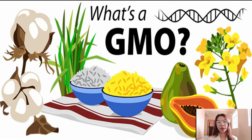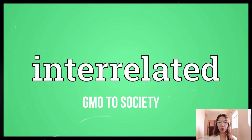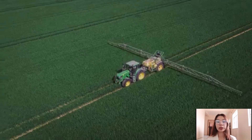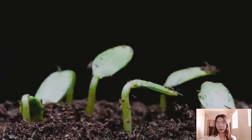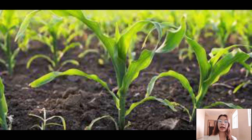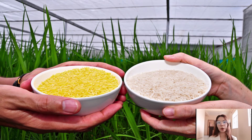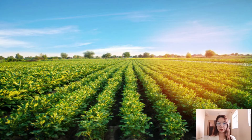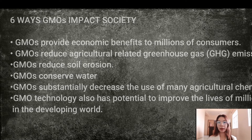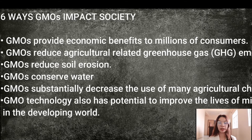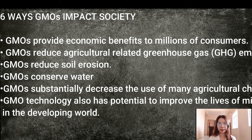Good morning everyone, I am Angelica Joshua Emanipiz and the topic assigned to me is the interrelatedness of GMO to society. GMOs can help our society — aside from providing and producing healthy and safe products or foods, they are also a way to conserve natural resources. Cecilia Chiham, Director of Science and Technology at PIPRA, provides six ways on how GMOs impact society.